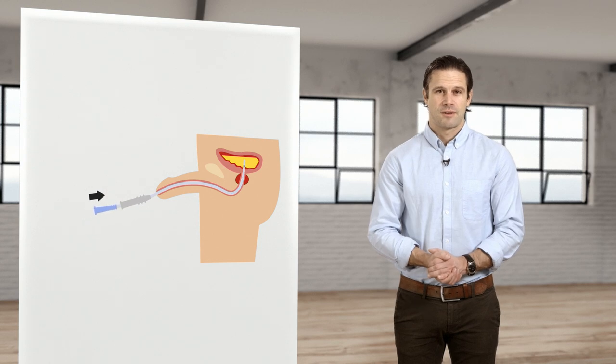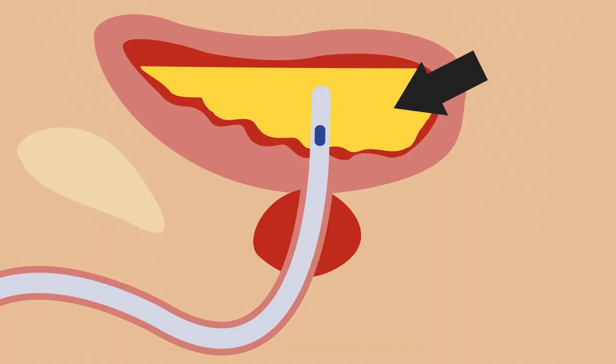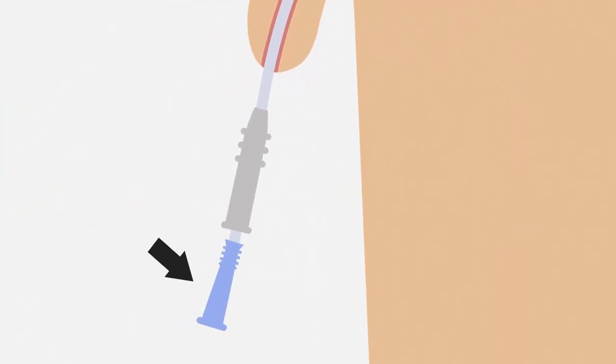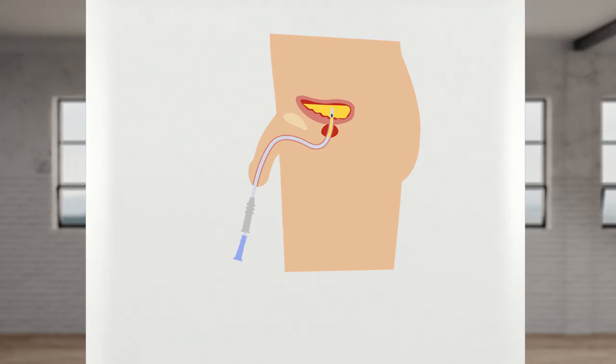It may feel a bit odd to start with, but you'll soon get used to it. Once the catheter gets inside the bladder, the pee goes in through the holes and out through the connector. Don't forget to point your penis and the funnel end of the catheter down towards the toilet, jug, or drainage bag.